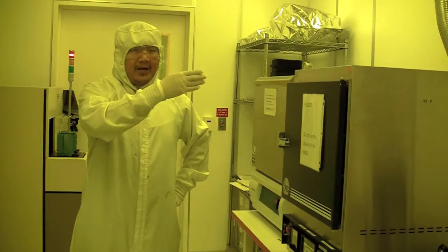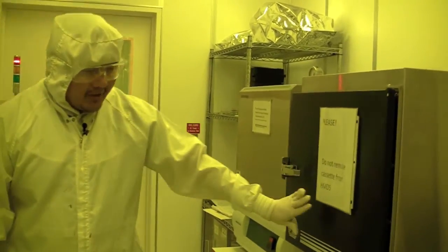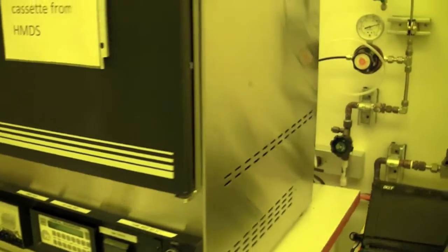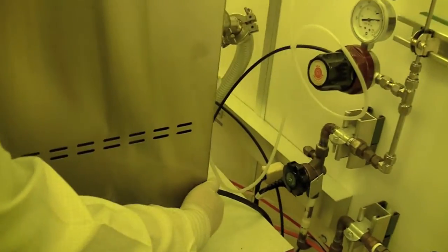So after we've turned the pump on, we come back to the oven and now we're going to turn the oven on. So on the oven on the back, there's a switch. It's located right here. And you just flip it on, and you can see the oven is turned on.